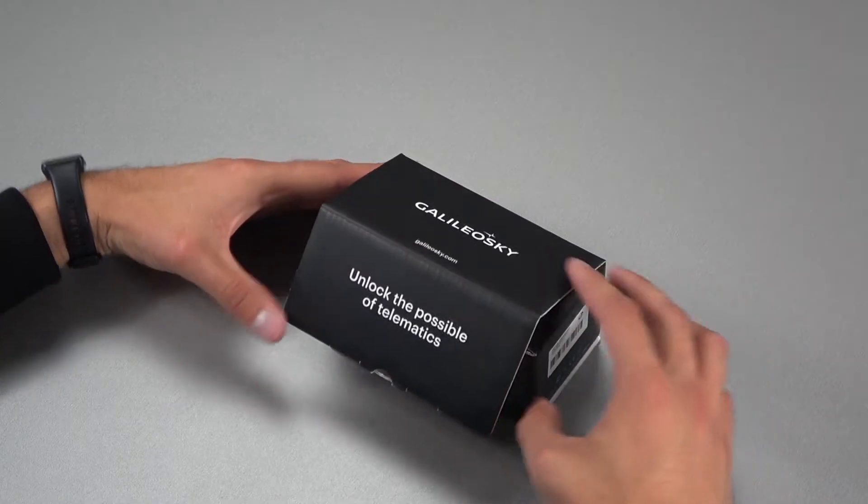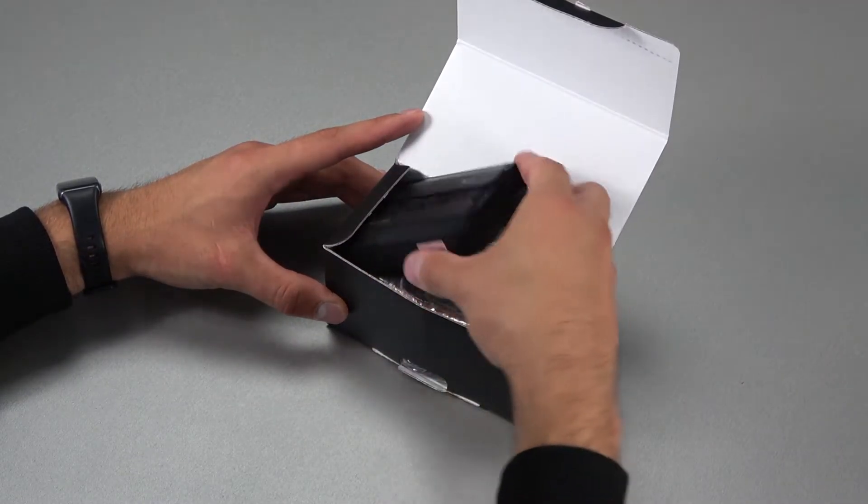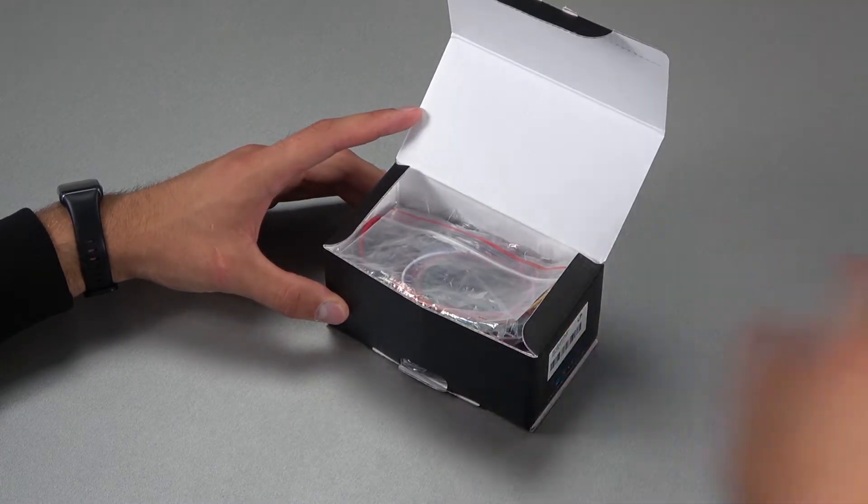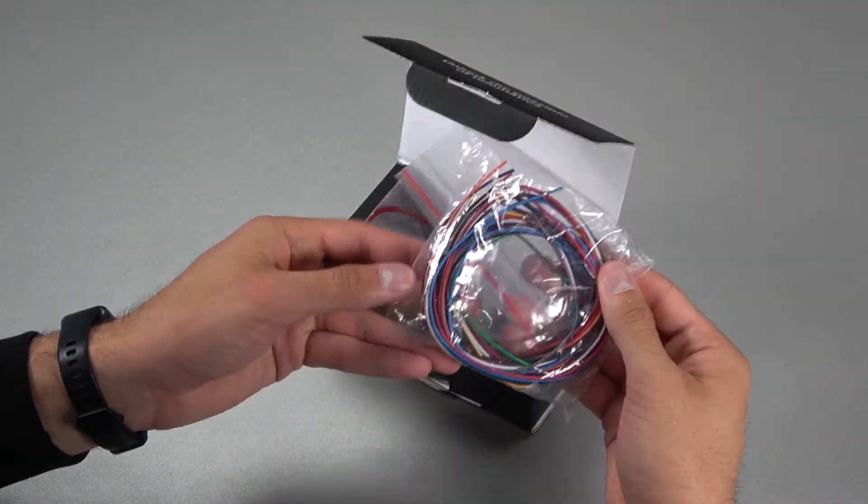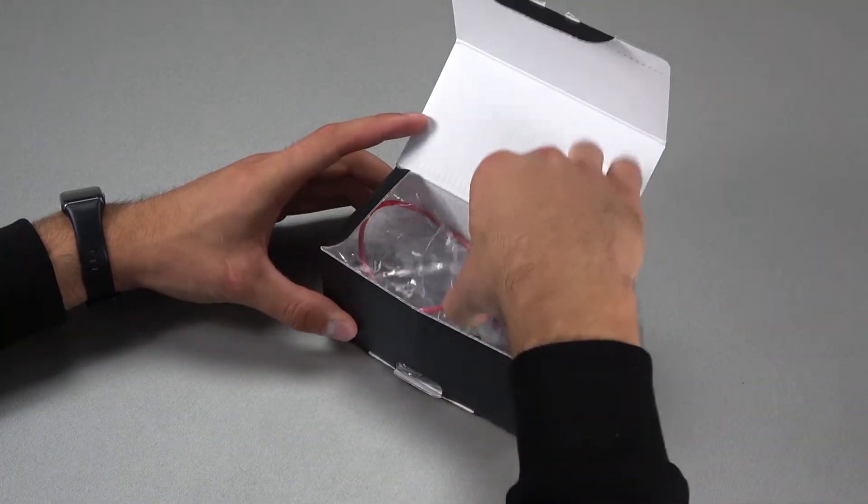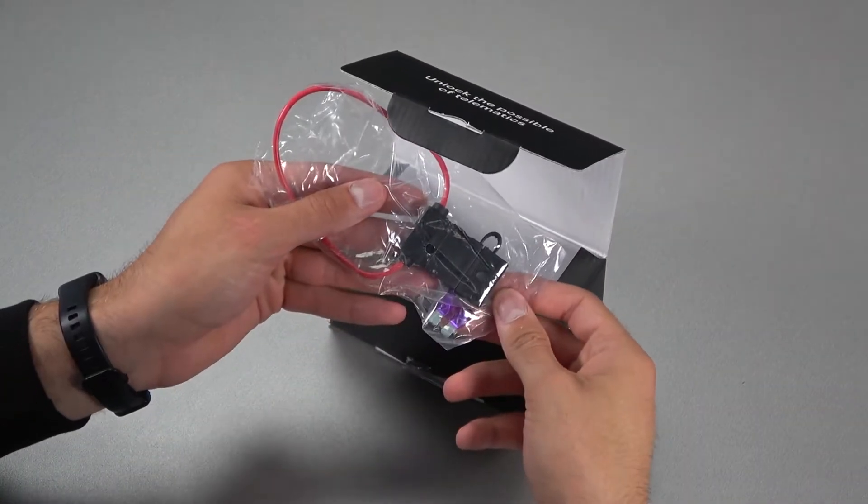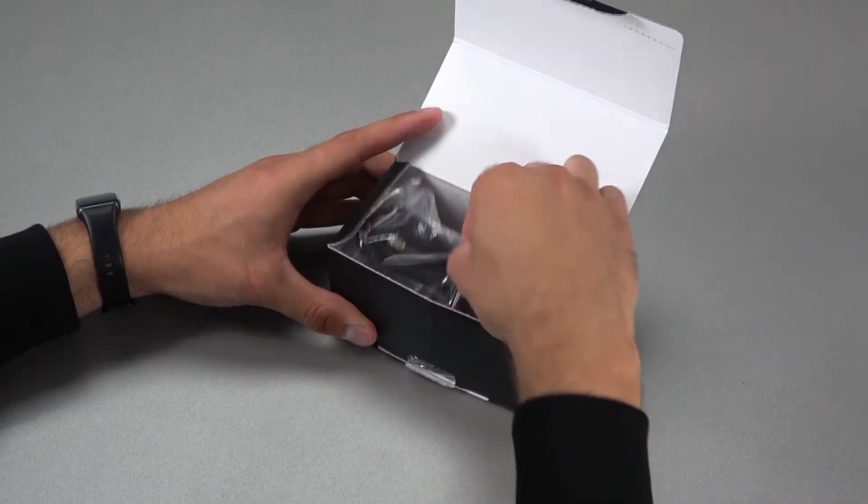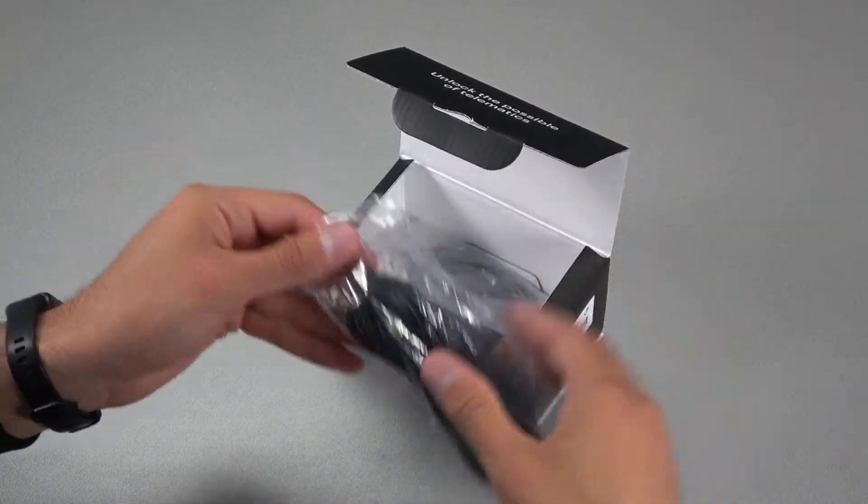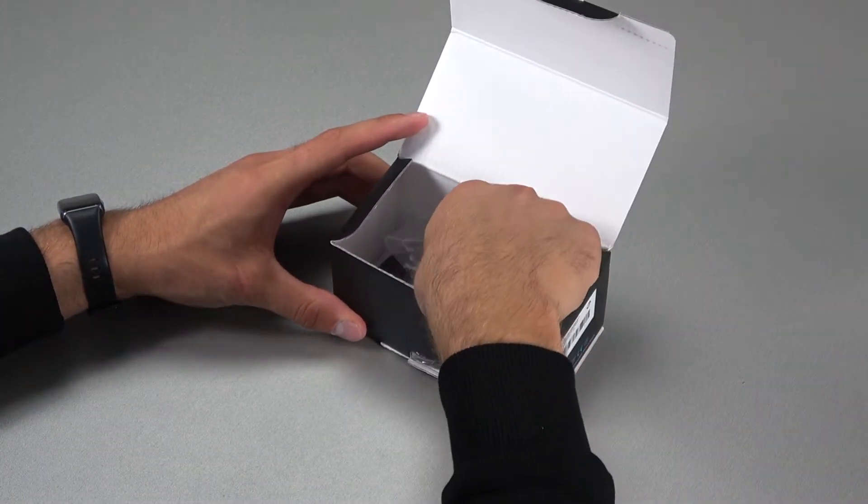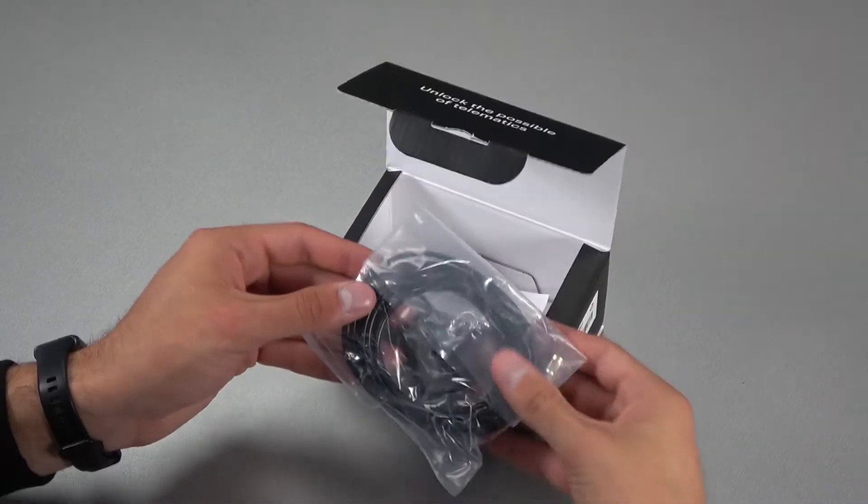Let's start with the unpacking. In addition to the device itself, the Galileo Sky 7X package includes a connector block, a set of wires, a fuse block with a fuse, and if the device is not equipped with internal antennas, then the package contains external GSM and GPS antennas, as well as a device passport and user manual.